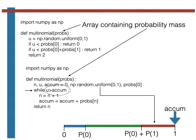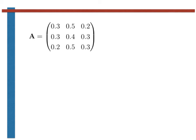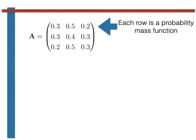Great! So we now have an algorithm to generate a discrete random variable with any probability mass function we choose. But what does this have to do with sampling a Markov chain? Well, consider the transition matrix shown here — every single row in this matrix is a probability mass function. If we know what state we are currently in, we can use the algorithm we have just written to generate the next state in the chain. Before writing the code to generate our Markov moves, we just have to put the information in this matrix into Python using the np.array command shown here.